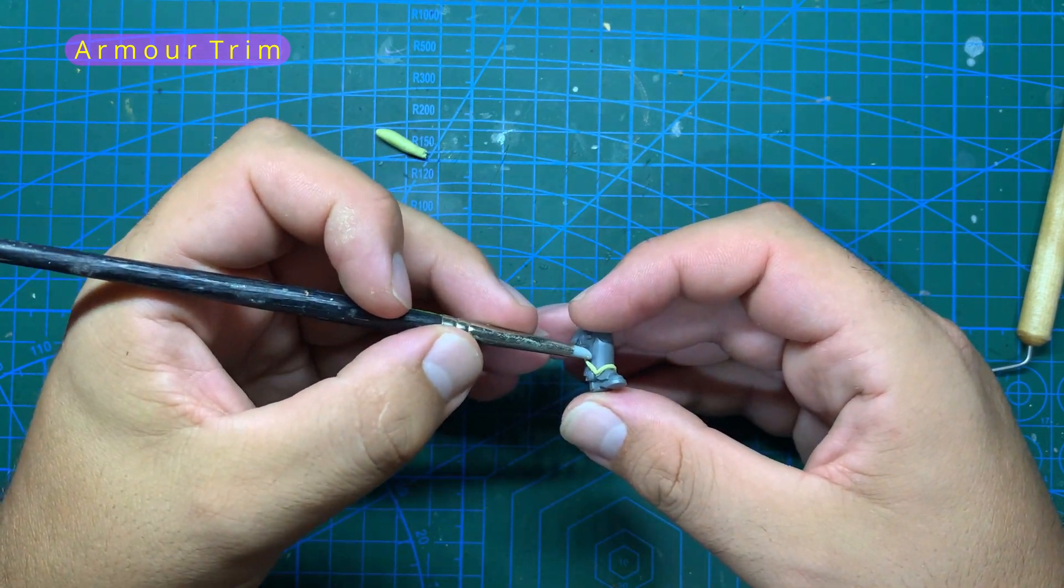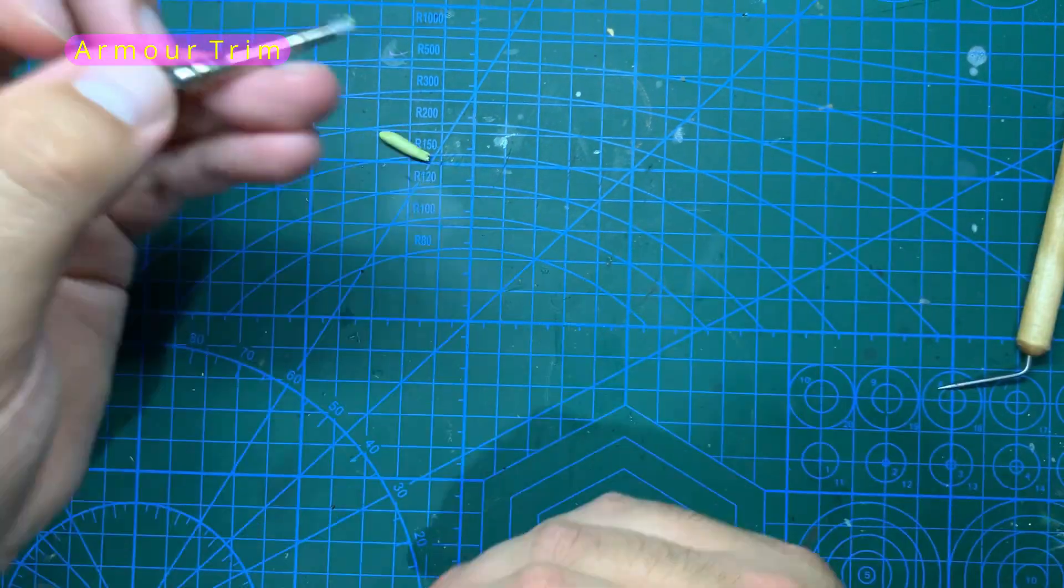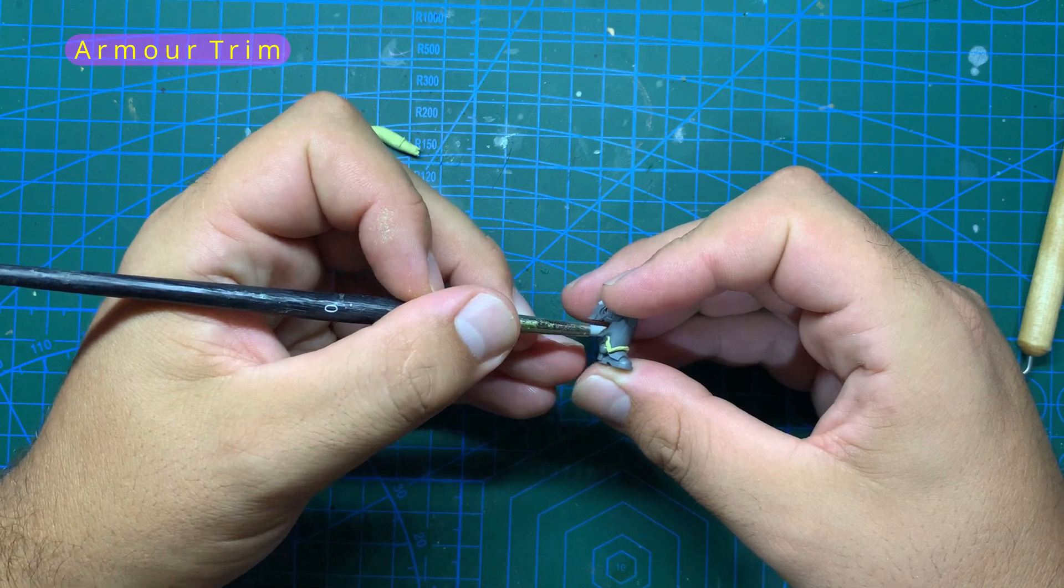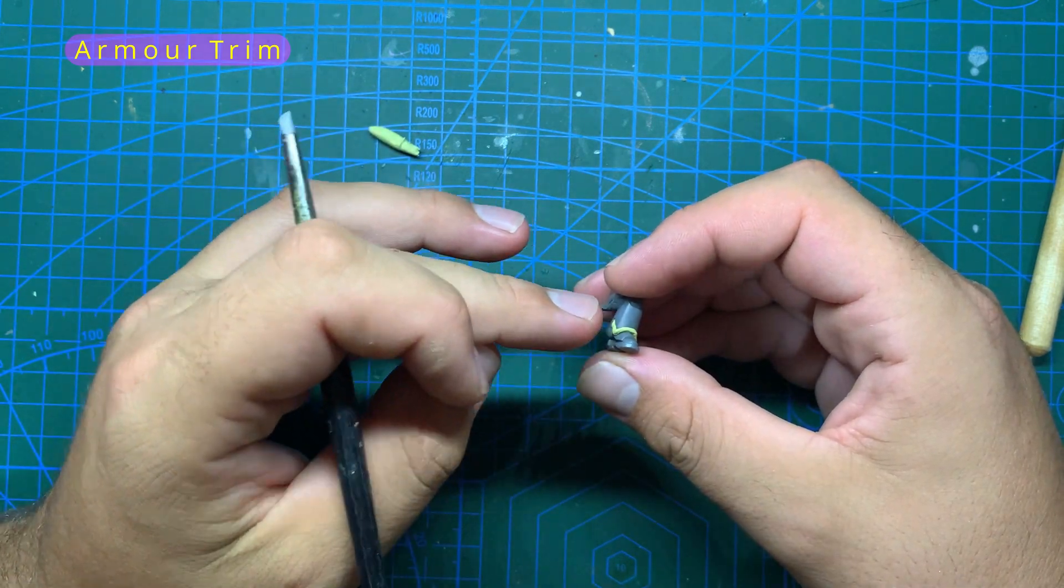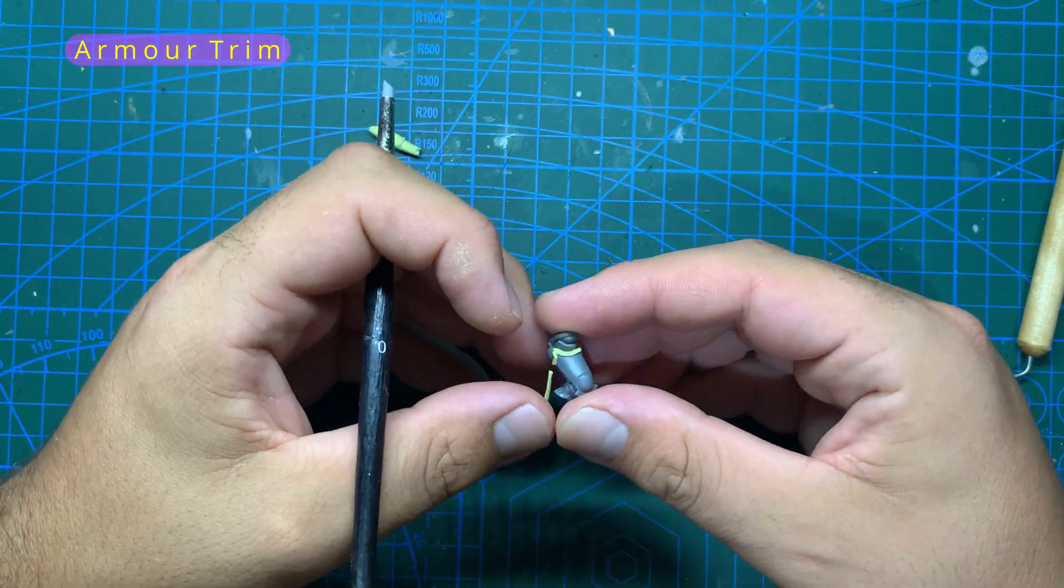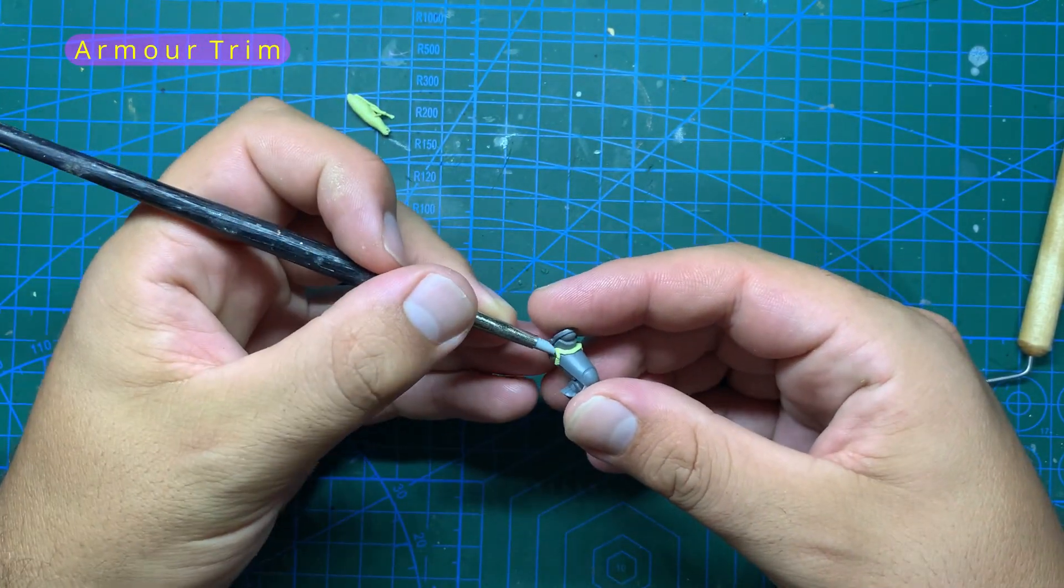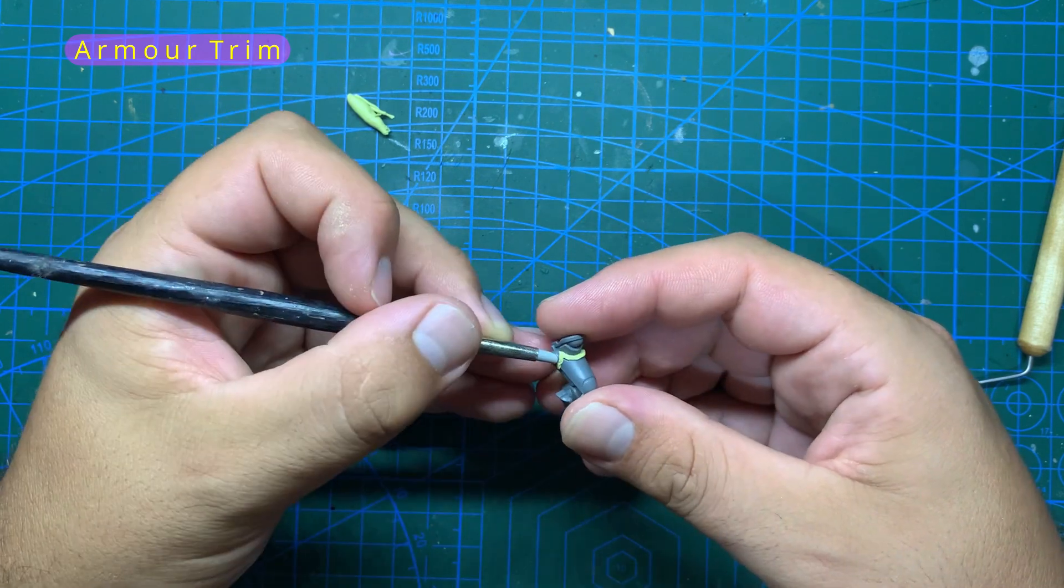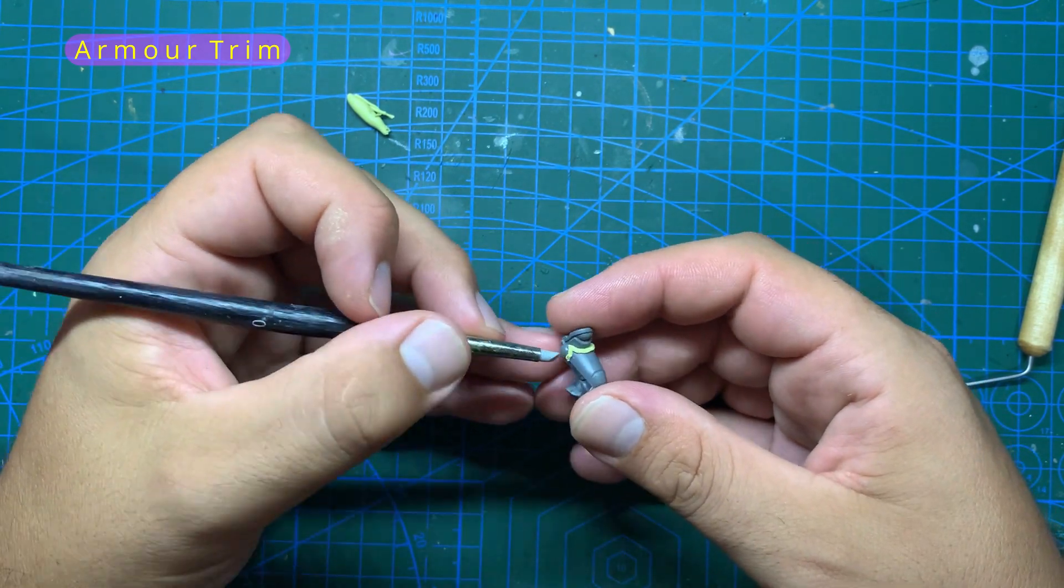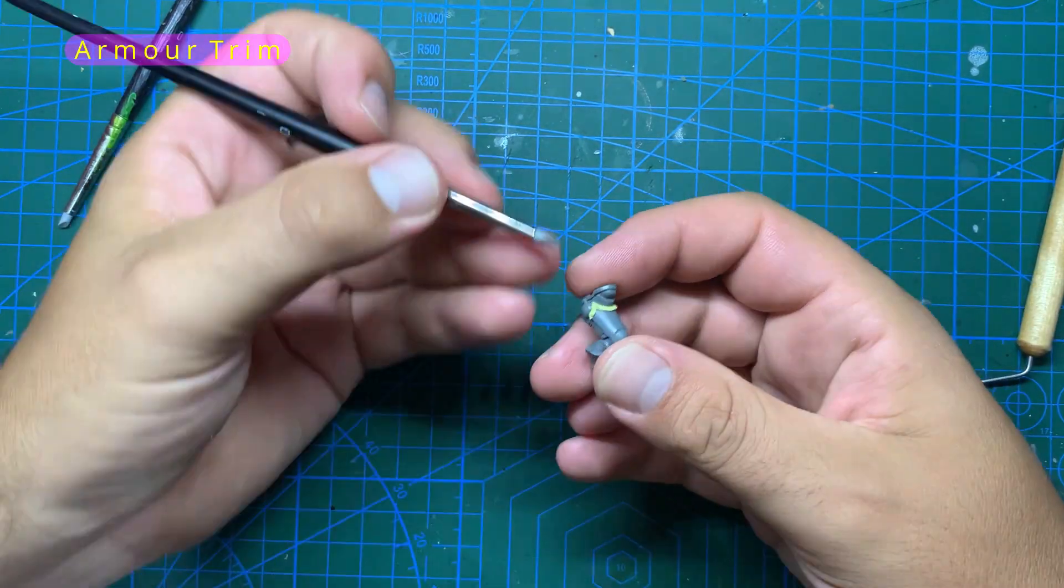Once this has been done I can then take a pointy tool and make some little indents in the trim so it's not all boring and flat. This trim piece took quite some time as I'm not that good at making these small things with the Milliput, and it is much softer than the green stuff I'm used to working with. Hence the reason I only did the bottom of the leg plates. I feel doing all of the edges would be better, but this was a quick test. Maybe I'll do it again properly at a later date.